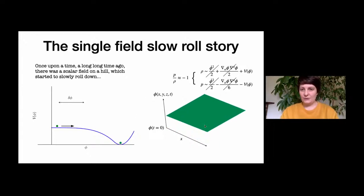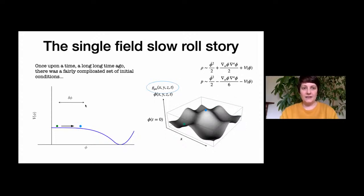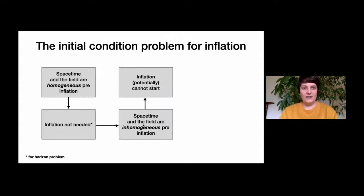If we really want inflation to solve the horizon problem, the initial conditions must be fairly complicated: the gradient and kinetic terms are non-negligible, and large perturbations in the scalar field imply large perturbations in the metric as well. It's not obvious that inflation can actually get started. This is the initial condition problem for inflation. If spacetime is homogeneous before inflation, you don't need inflation for the horizon problem; but if it's inhomogeneous, inflation may not be able to start.